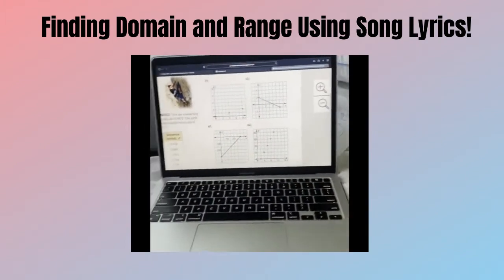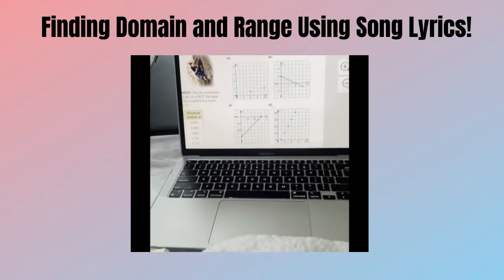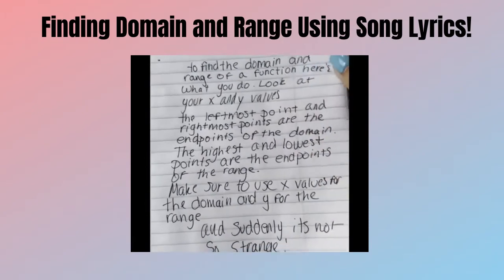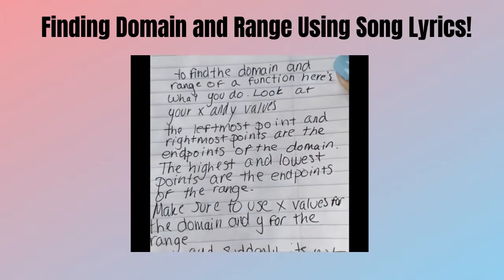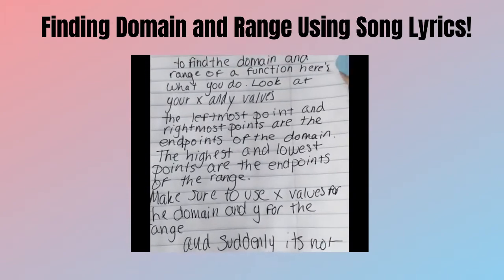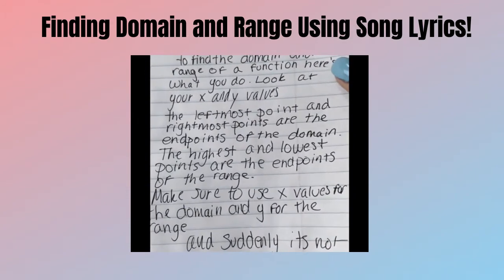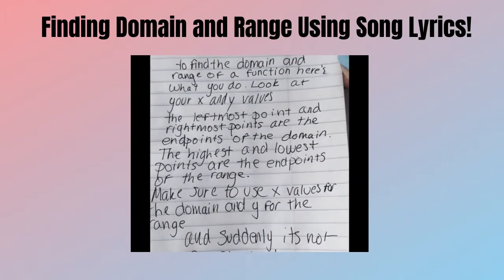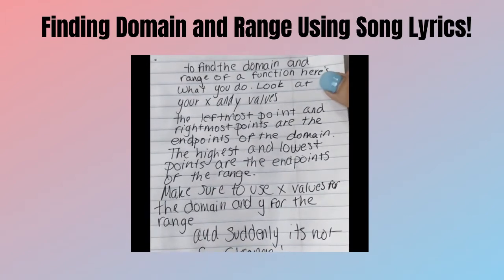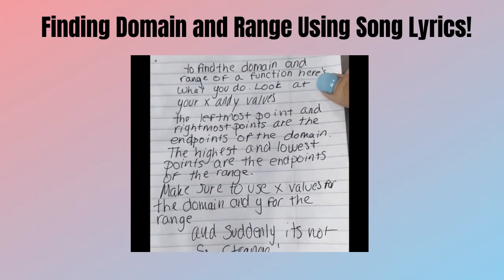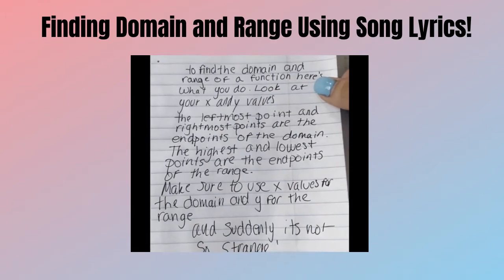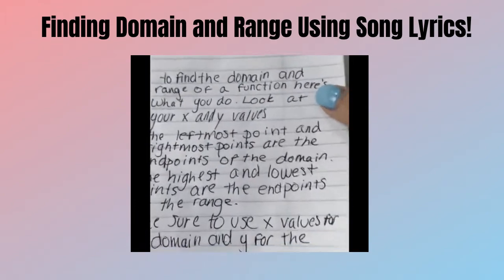Okay, so I'm going to be using the Melodies for Maths song. And the lyrics are: to find a domain and range of a function, here's what you do. Look at your x and y values. The leftmost point and rightmost points are the endpoints of the domain. The highest and lowest points are the endpoints of the range. Make sure to use the x values for the domain and y for the range. And suddenly, it's not so strange.